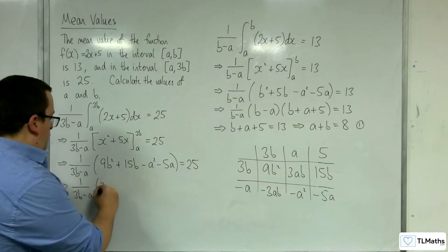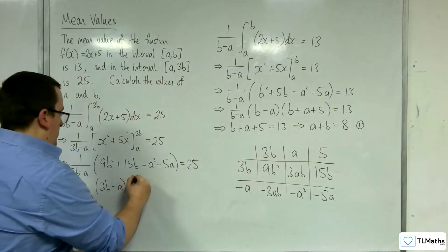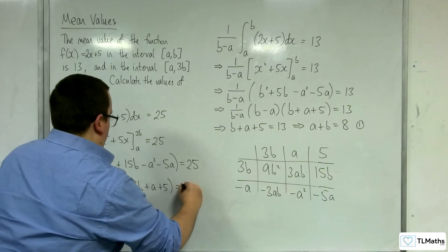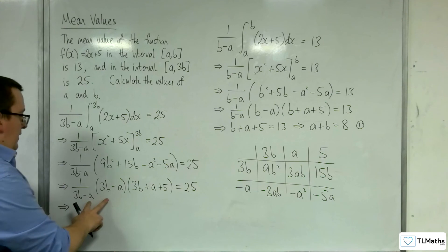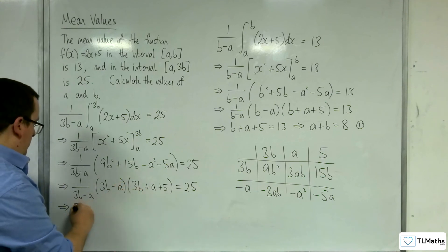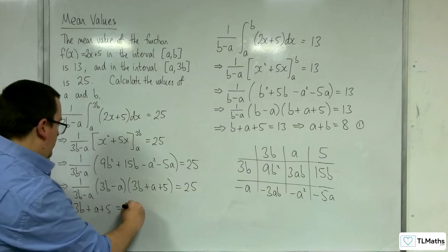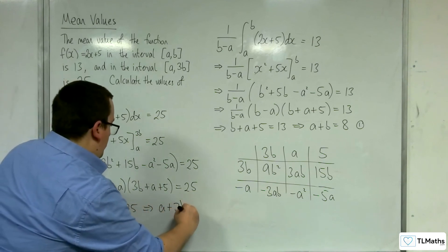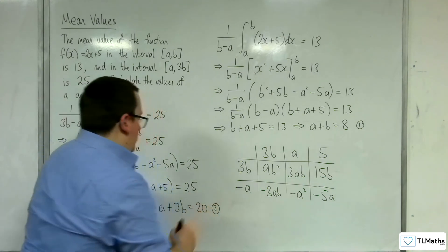So I've got (3b - a) times (3b + a + 5). So these cancel and I'm going to be left with 3b + a + 5 equals 25, which implies that a + 3b must be equal to 20. And this is equation number 2.